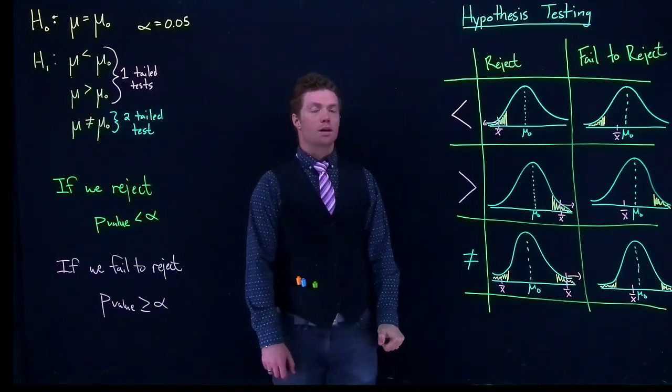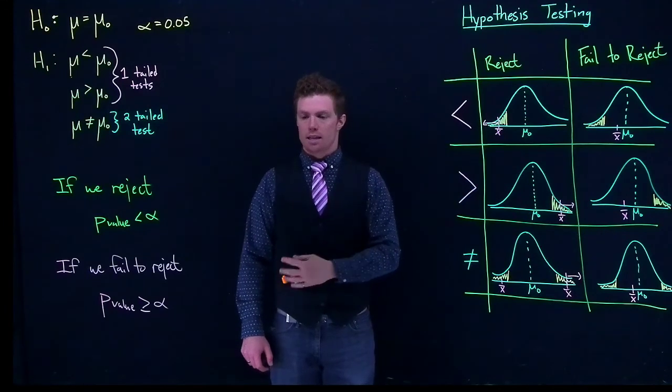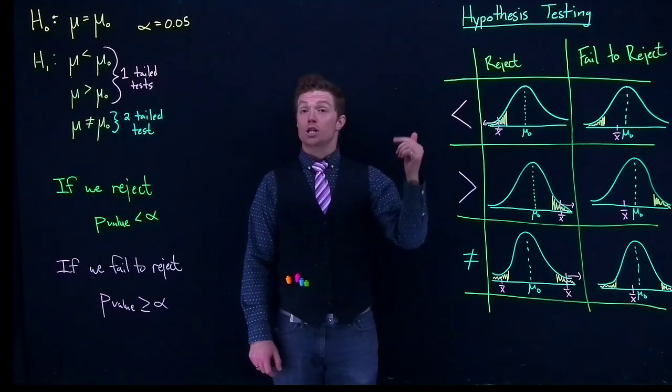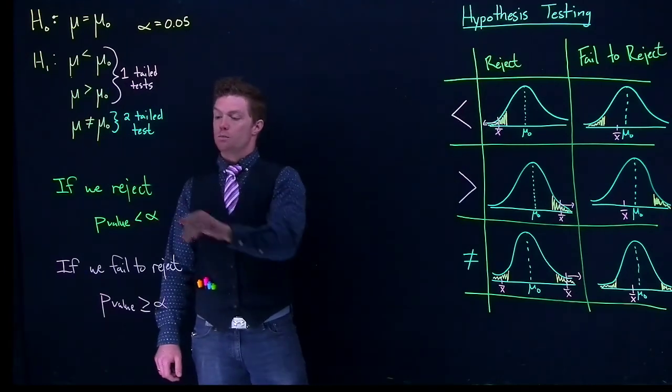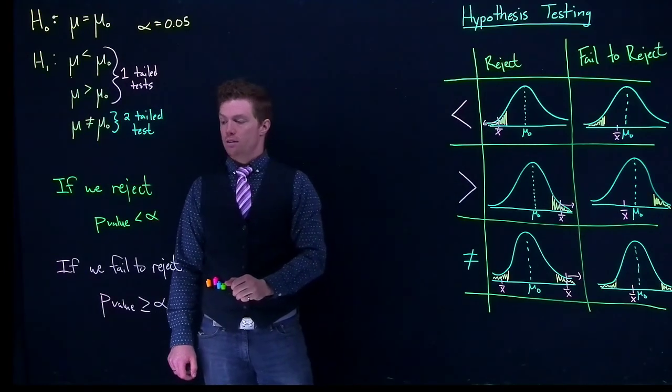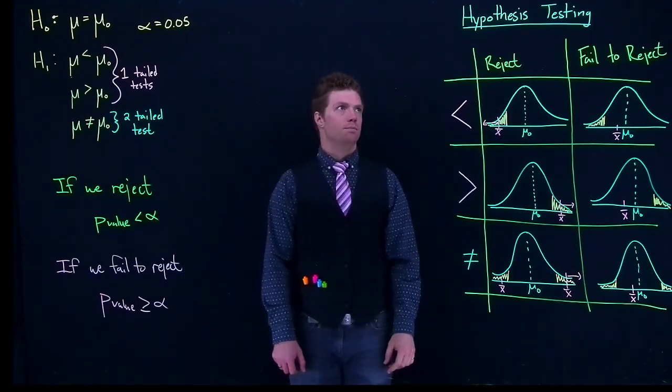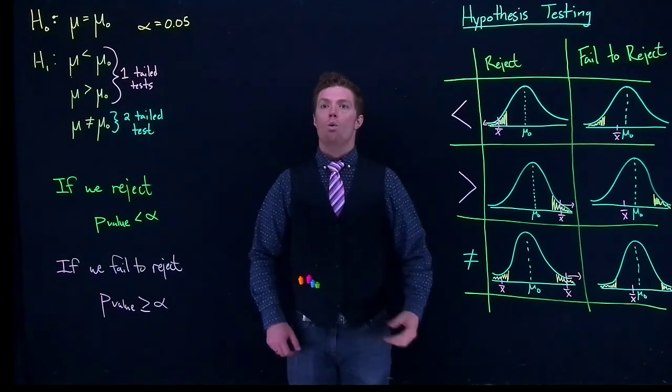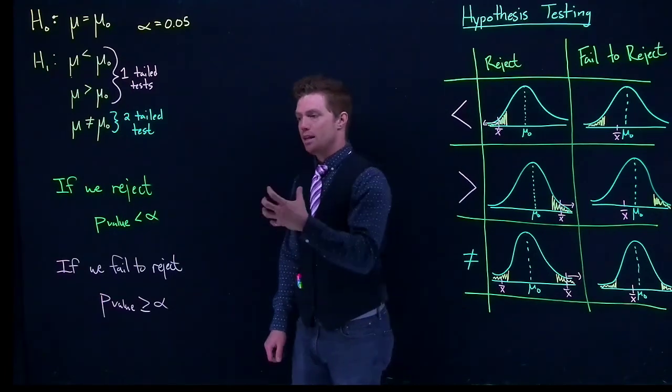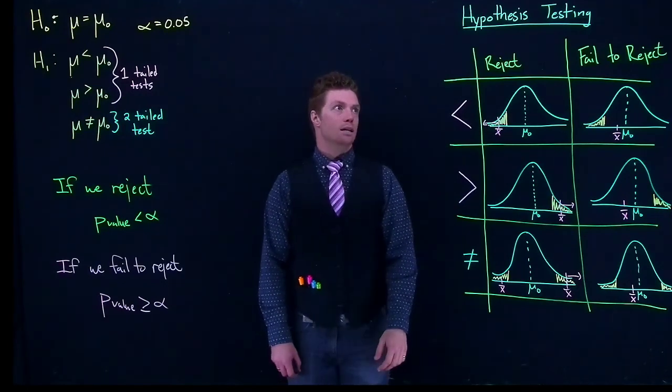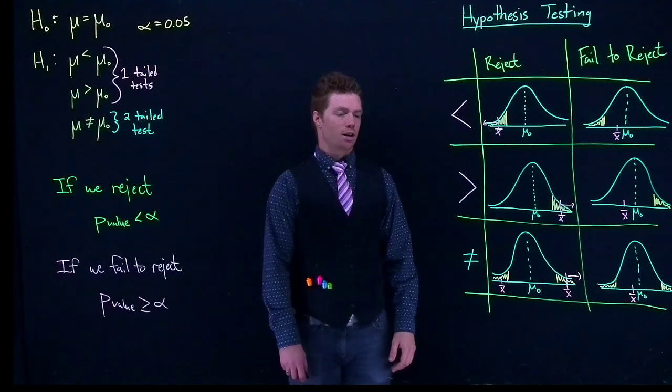And if we land here, we know that if we've landed inside of the rejection region, we reject the null hypothesis. And when we reject, we know that our p-value is going to be less than alpha. And if we fail to reject, it's going to be greater than or equal to alpha. So this is just a visual representation of what's actually happening when we're doing this hypothesis testing, when we're calculating out these p-values, and this helps us do some interpretations in our conclusions as well.